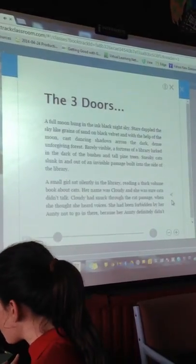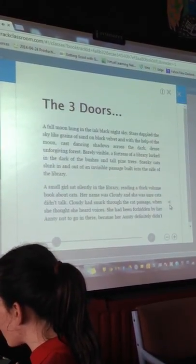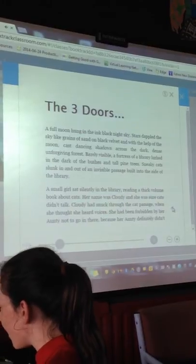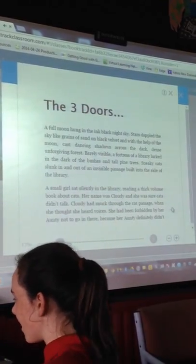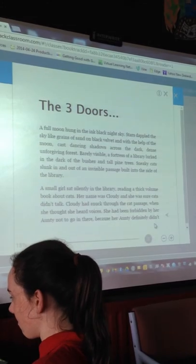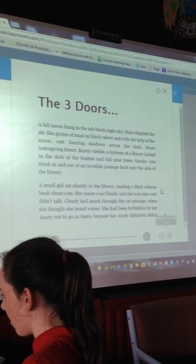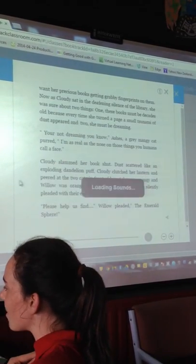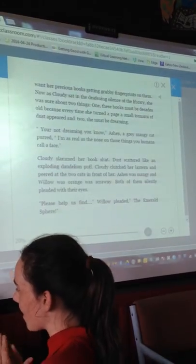Cloudy had snuck through the cat passage when she thought she heard voices. She had been forbidden by her auntie not to go in there because her auntie definitely didn't want her precious books getting grubby fingerprints on them.